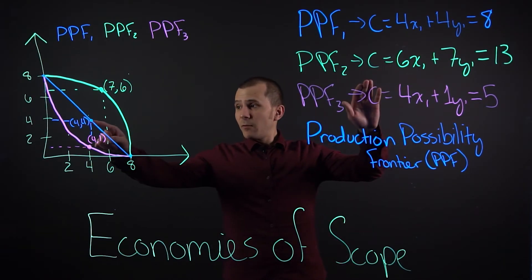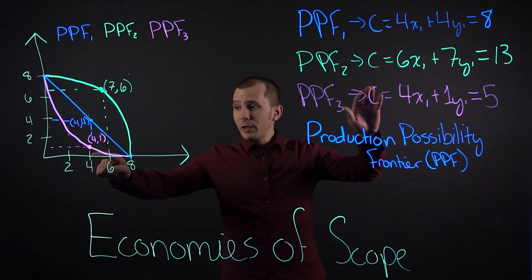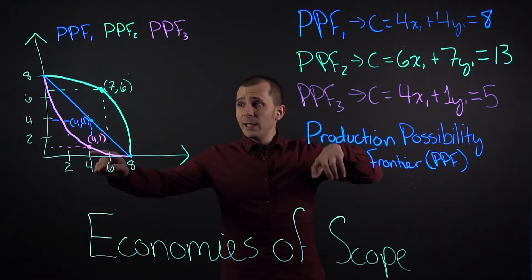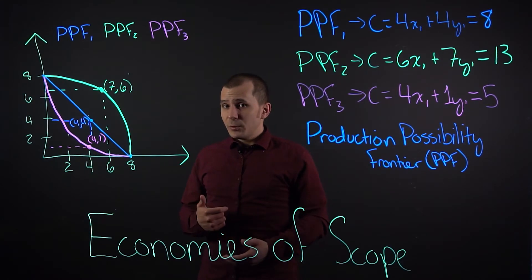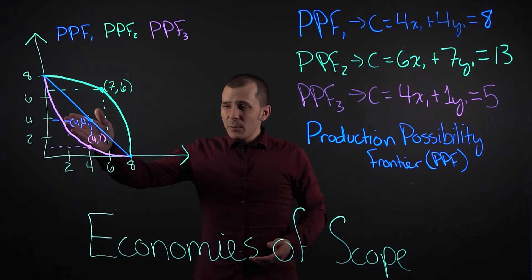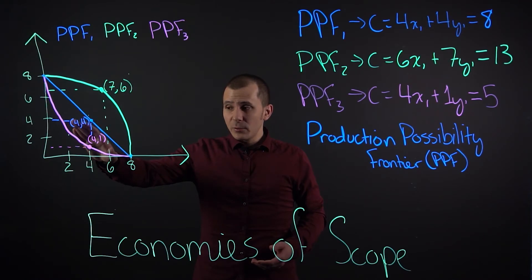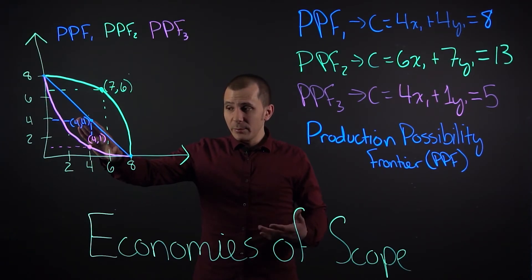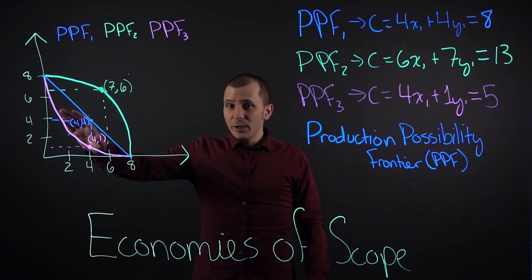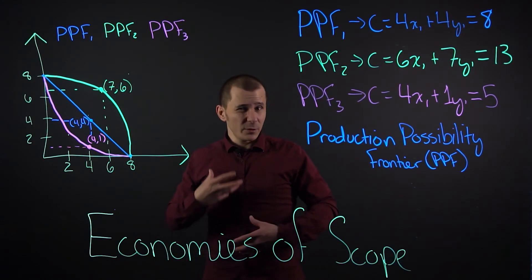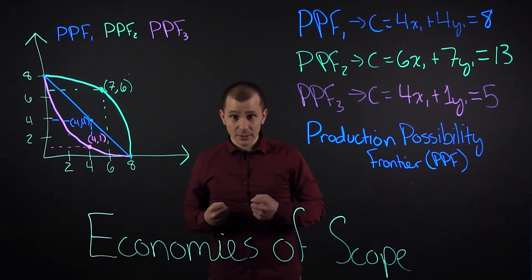If we produce four units of Y, we can only produce four units of X in an economy not of scope. The opposite can be true in a diseconomy of scope, where when you produce four units of X, you can only produce one unit of Y for the same average cost balance.